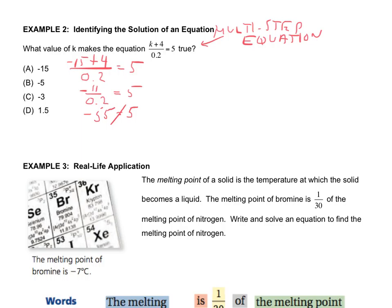Let's try letter B: plug in negative 5. Negative 5 plus 4 is negative 1, divided by 0.2 equals 5. Negative 1 divided by 0.2 is negative 5 — that's close, but negative 5 and positive 5 are not equal. One is positive and one is negative, so they do not equal. Moving on to letter C.